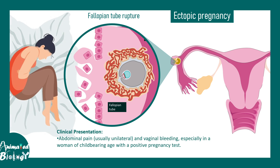Rupture of the fallopian tube leads to severe cramping, abdominal pain, and vaginal bleeding, along with many other complications. Symptoms may progress to hypovolemic shock if there is excessive blood loss.